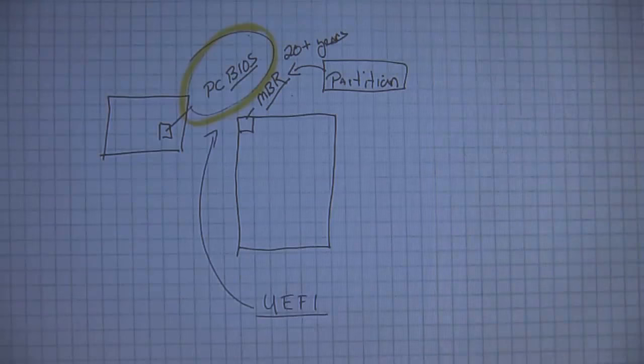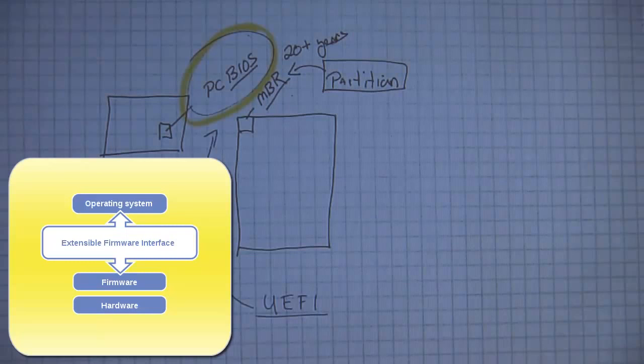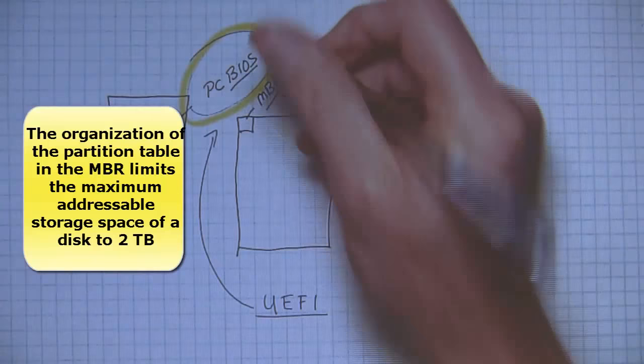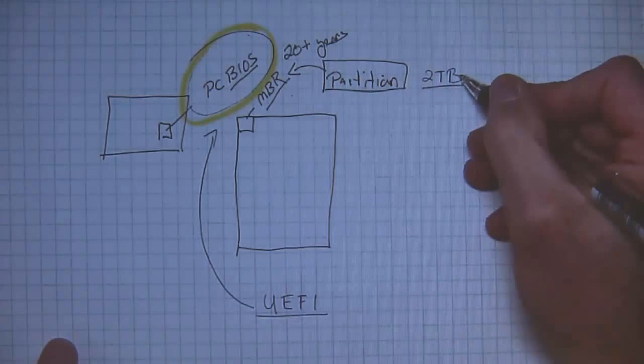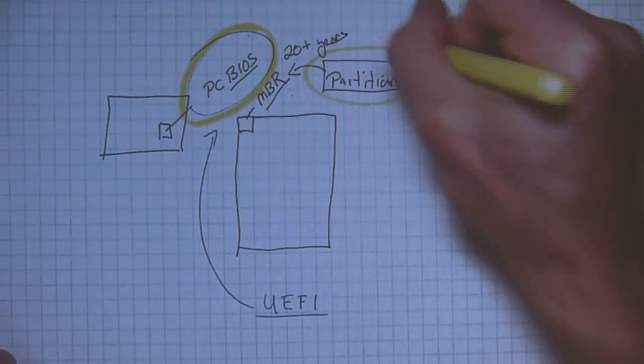The other problem is this partition table inside of the Master Boot Record. The partition table cannot handle large hard drives. In fact, it maxes out at about 2 terabytes. So this whole partition table is now very old, and we're going to have to get rid of it. We are going to replace this old partition table for a new one, and it's called GPT.